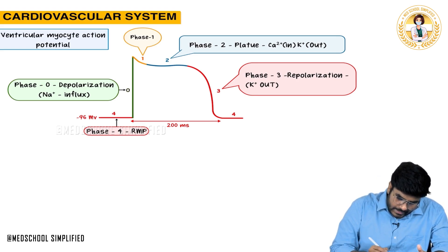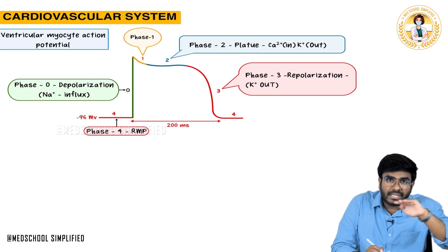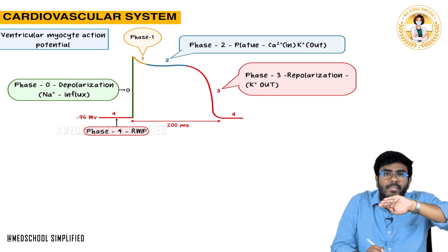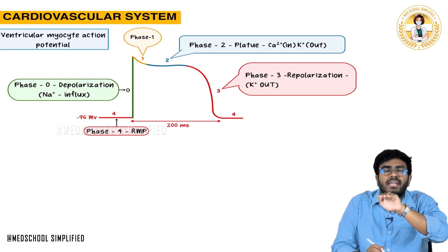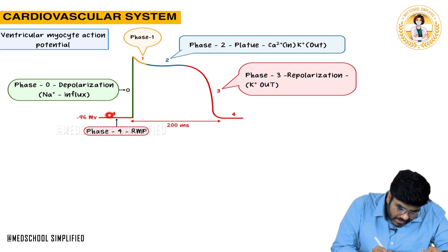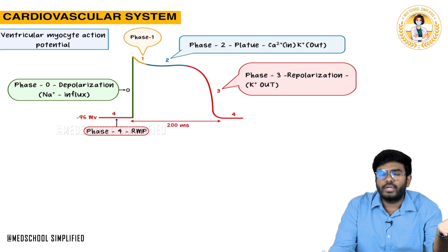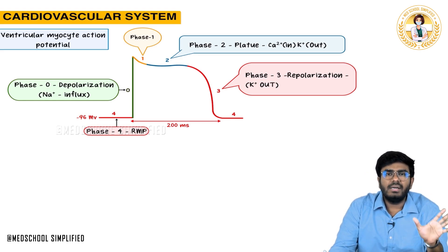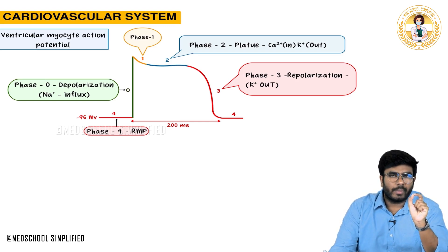Please look here guys — the resting membrane potential. It's not a restless membrane potential; it's just a resting membrane potential. All the time the cell is negative, at minus 90 millivolts. Simply remember that a ventricular myocyte has a membrane potential of minus 90 — a negative potential.